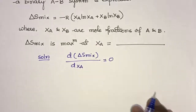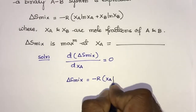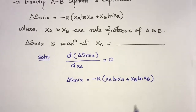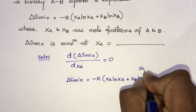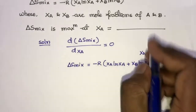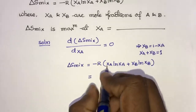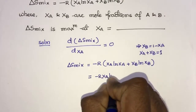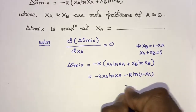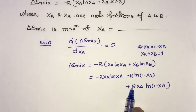To find the maximum of ΔS_mix, the condition d(ΔS_mix)/d(xA) = 0 must be satisfied. Here ΔS_mix = −R(xA·ln xA + xB·ln xB). We convert xB in terms of xA using xA + xB = 1, so xB = 1 − xA. Substituting gives: ΔS_mix = −R·xA·ln xA − R·(1 − xA)·ln(1 − xA).